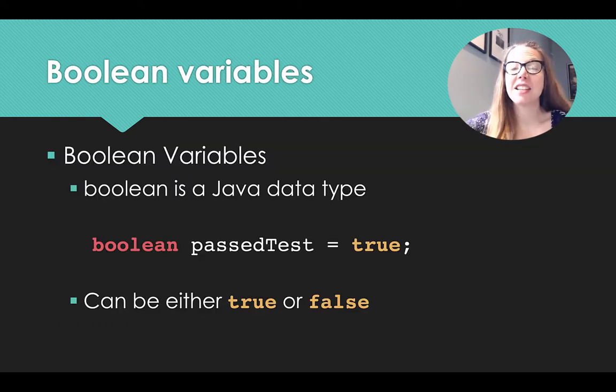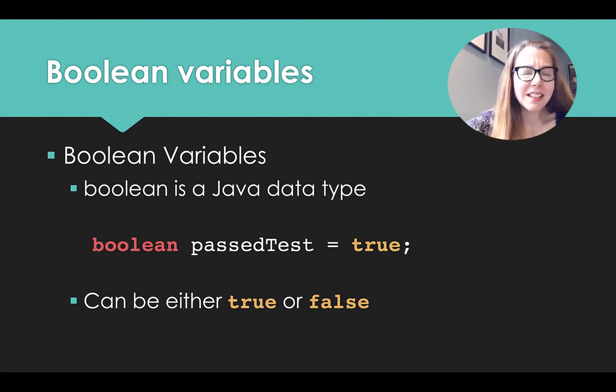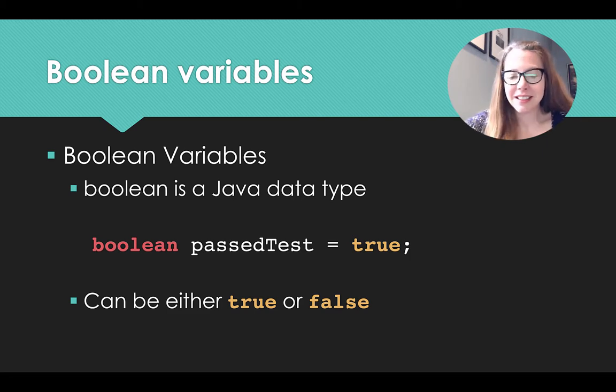Boolean is a Java data type and so today we're going to look at those variables that are of data type Boolean. So you'll see here that we have a Boolean variable named past test and it's set to true. That is because a Boolean variable can hold one of two values either true or false. And this is useful if you think about how we make decisions. They always evaluate to true and false and so those values are of a Boolean data type.